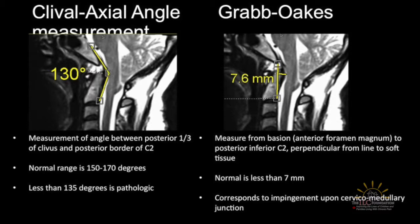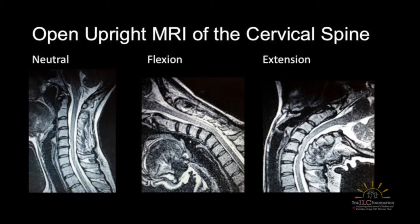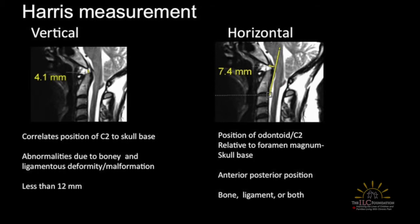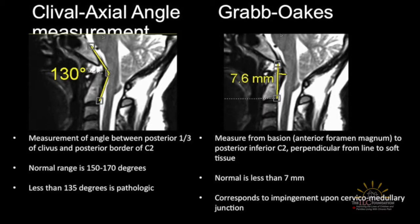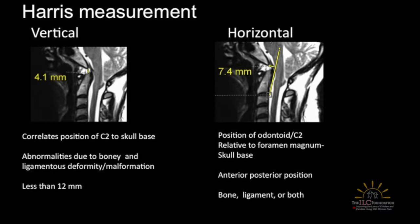The angulation is a function of how much the brain stem may be draped across the bony structures. The second metric is Grabb's measurement, taken from the front part of the foramen magnum to the bottom back of C2, with a perpendicular drawn — a general indication of how much soft tissue and bone is projecting backwards upon the brain stem. Harris measurements are derived from the trauma literature and are suggestive of ligamentous disruption; anything greater than 12 millimeters suggests the ligaments are no longer intact.